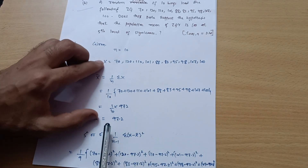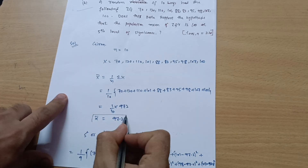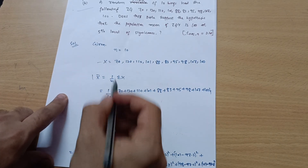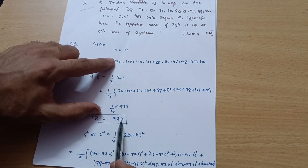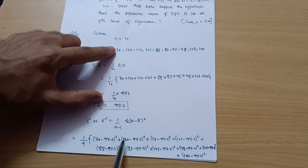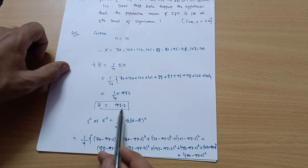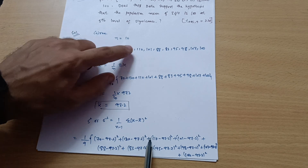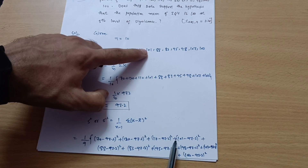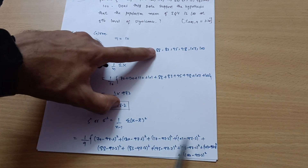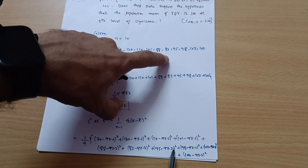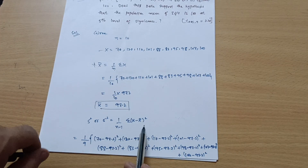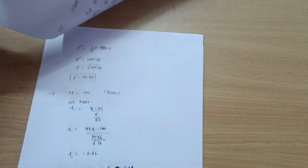For each observation x, we subtract x-bar (97.2) and square the result. So: (70 minus 97.2) squared, plus (120 minus 97.2) squared, plus (110 minus 97.2) squared, plus (101 minus 97.2) squared, plus (88 minus 97.2) squared, plus (83 minus 97.2) squared, plus (95 minus 97.2) squared — and so on for all values. This is the summation of (x minus x-bar) squared.